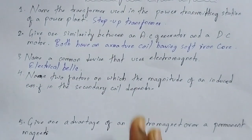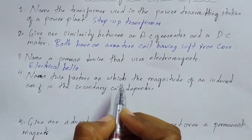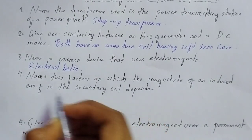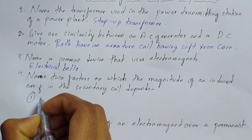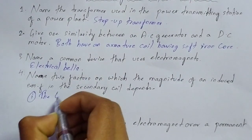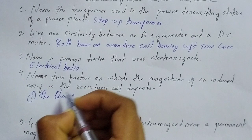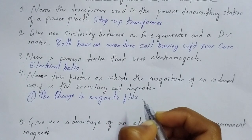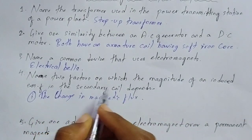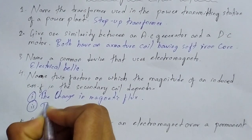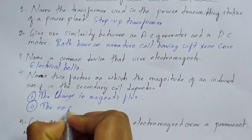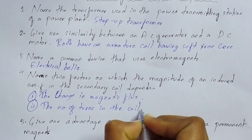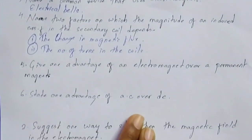Question number four: name two factors on which the magnitude of an induced EMF in the secondary coil depends. The first factor is the change in magnetic flux, and the second factor is the number of turns in the coil. These are the two factors on which the magnitude of induced EMF in the secondary coil depends.